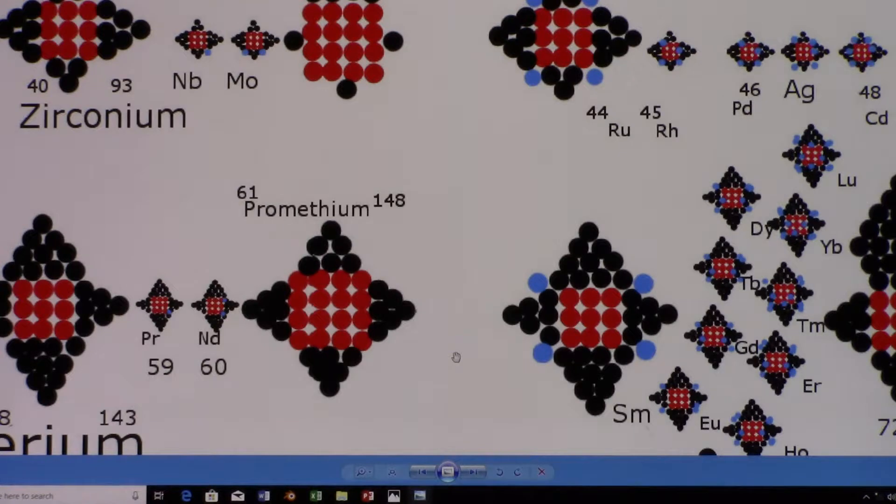If you just take a 4×4×4 cube and put three-layer cubes on it, you end up with exactly the right number of neutrons and protons to make promethium.